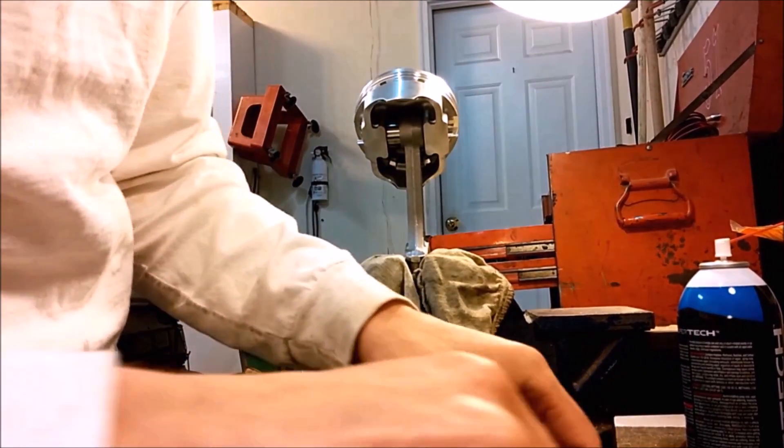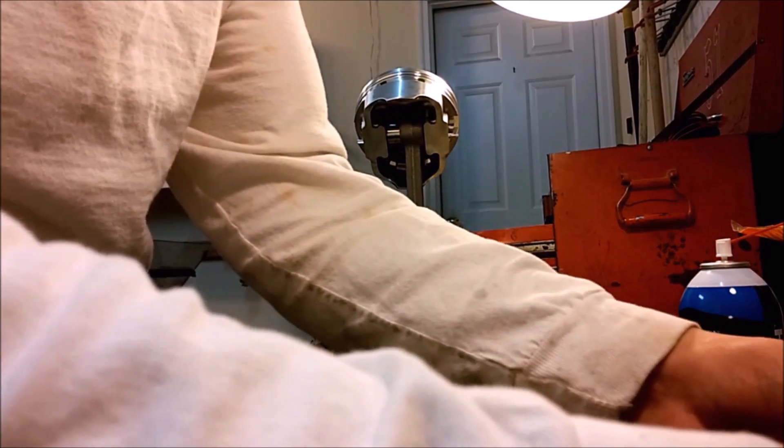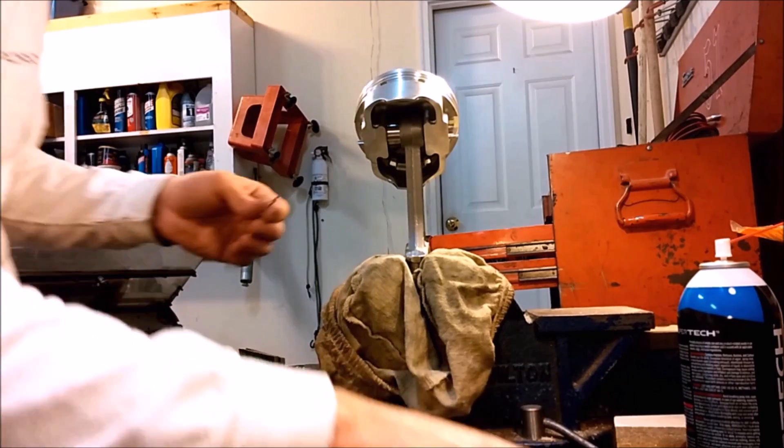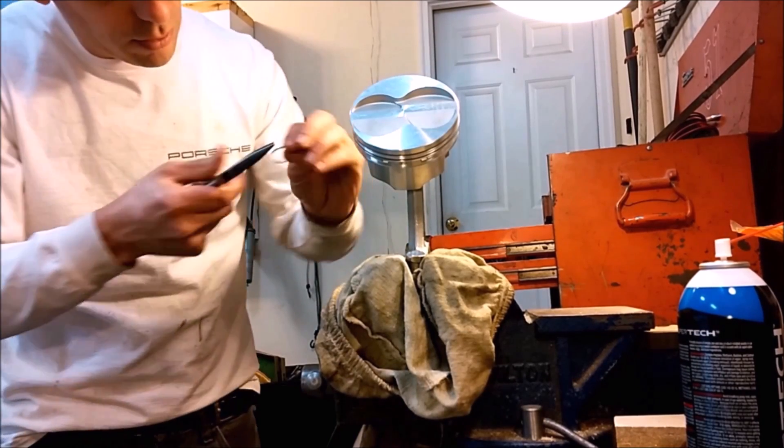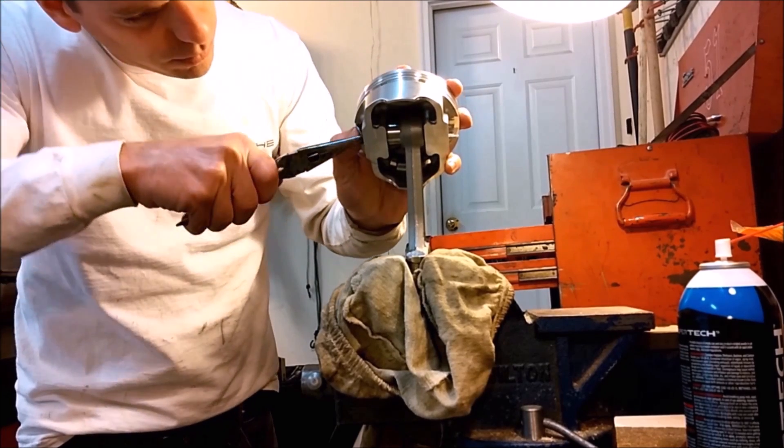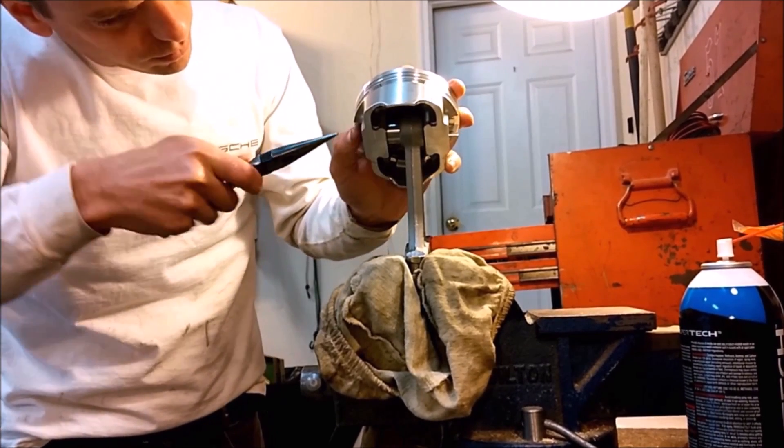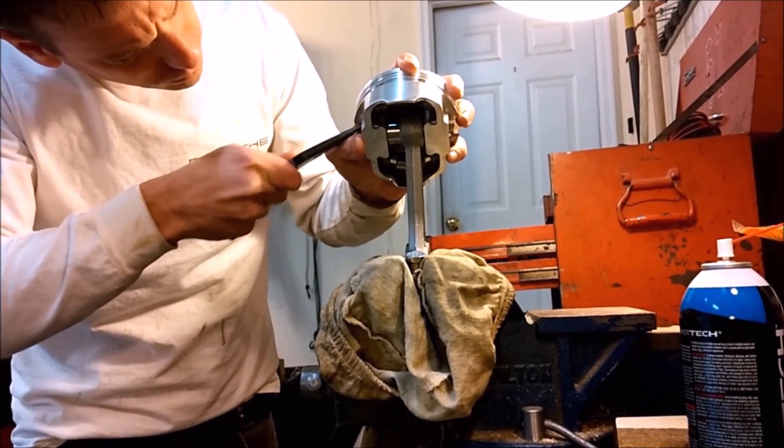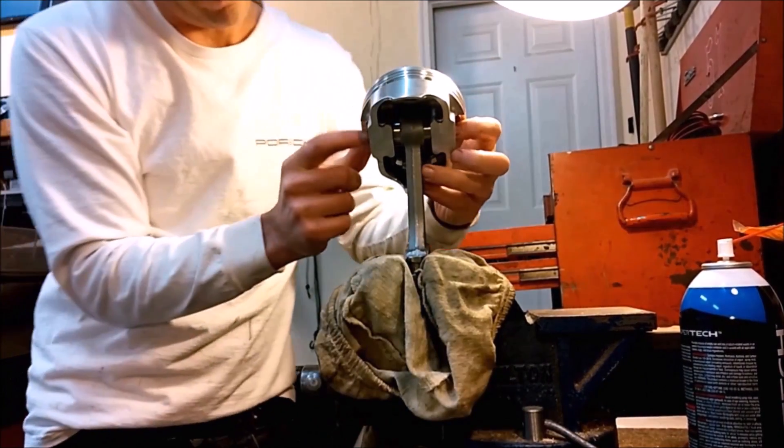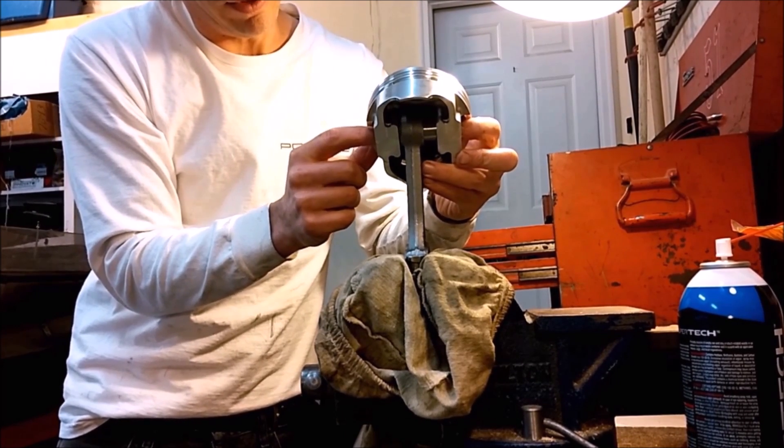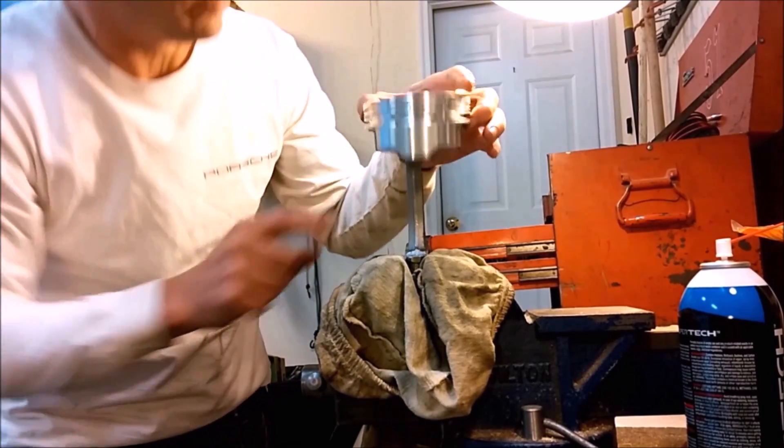We have to do this before the rings because on the 347, the rings intersect the wrist pin. Verify that the wrist pin will float at least ten thousandths between the two retaining clips and that the retaining clips are fully seated.